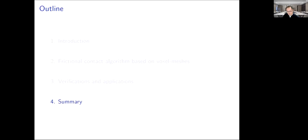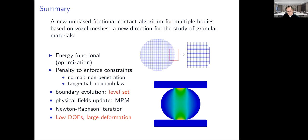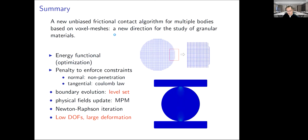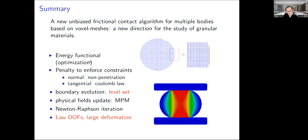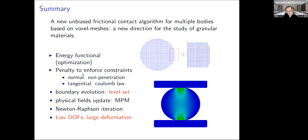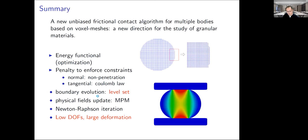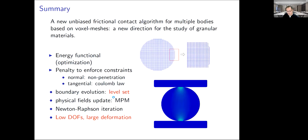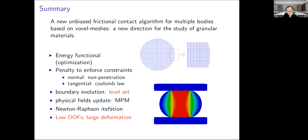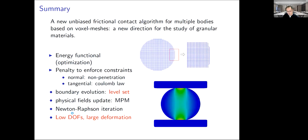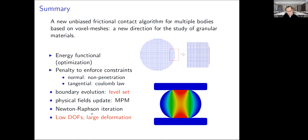Let's see the summary. In this work, we developed a new unbiased frictional contact algorithm for multi-bodies based on voxel meshes. We start from energy functional and use the penalty to enforce constraints. The boundary is evolved by level sets and the physical fields are updated by using the MPM. We use Newton-Raphson iterative scheme to compute the quasi-static problem.